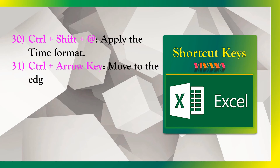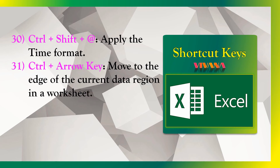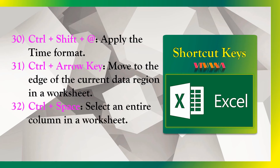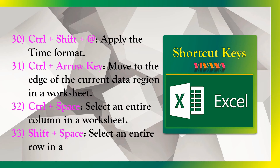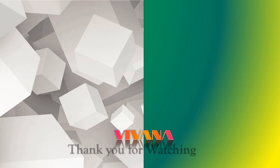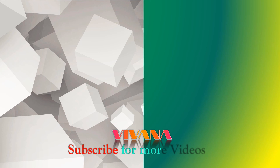30. Ctrl plus Arrow key — Move to the edge of the current data region in a worksheet. 31. Ctrl plus Space — Select an entire column in a worksheet. 32. Shift plus Space — Select an entire row in a worksheet. 33. Ctrl plus Shift plus Space — Select an entire worksheet.